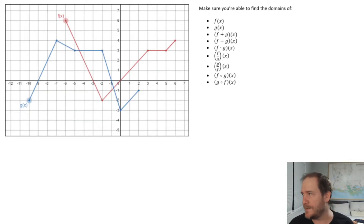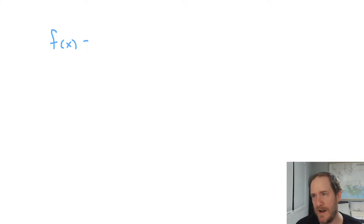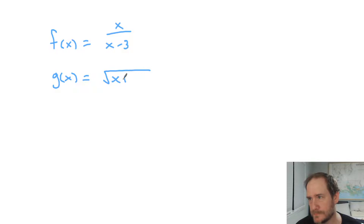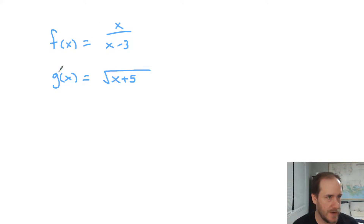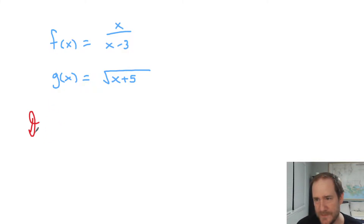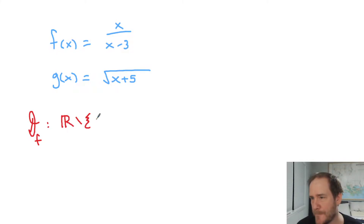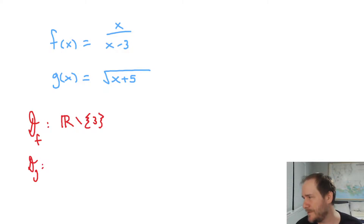Really, the way this will be assessed is you're going to be given the function rules. So I might hand you an f of x that is a rational function and a g of x that is a radical, and I'll ask for the domain of the function that results from different operations. First, could you find the domain of f all by itself? You know it's all real numbers except three. Can you do the domain of g all by itself?